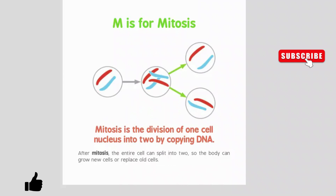M is for mitosis. Mitosis is the division of one cell nucleus into two by copying DNA. After mitosis, the entire cell can split into two, so the body can grow new cells or replace old cells.